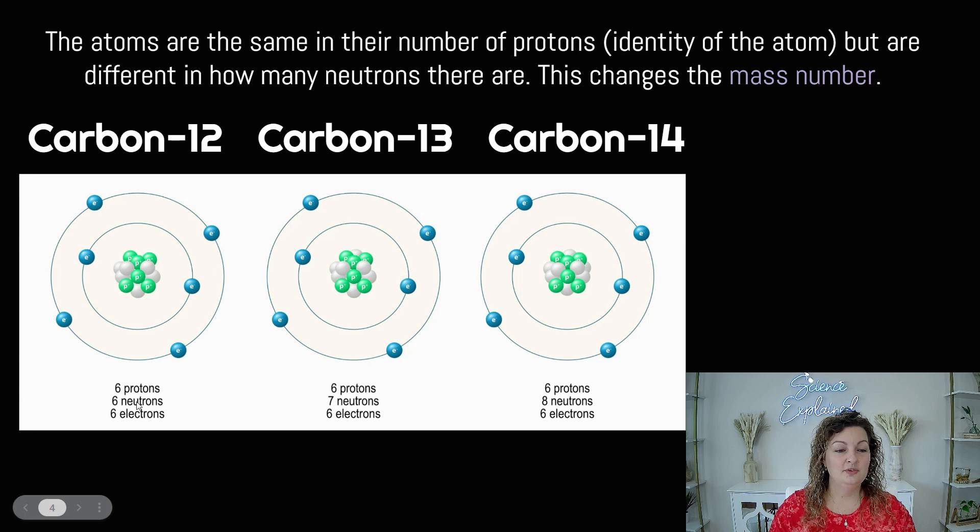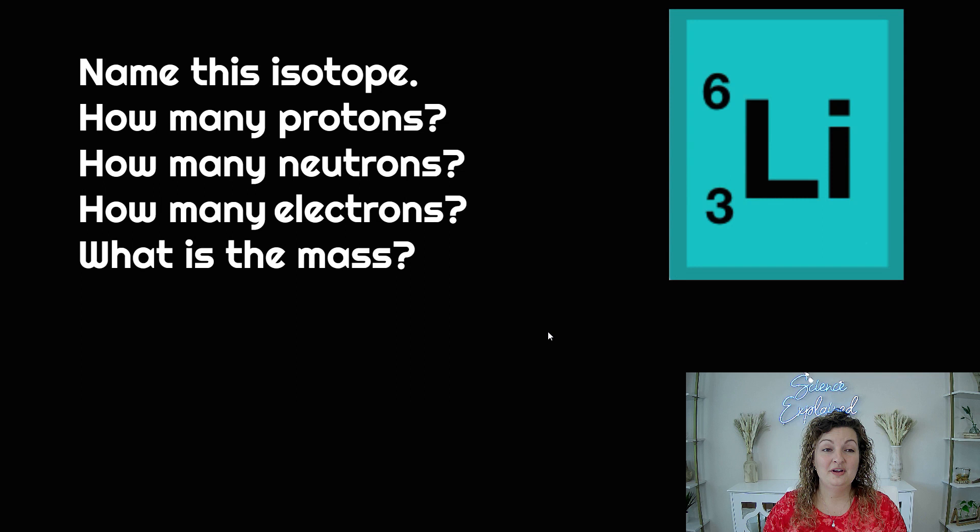and then our number of neutrons are going to add up to that mass. So six plus six equals 12, and then six protons plus seven neutrons equals 13, and then six protons plus eight neutrons equals 14. All of these particular ones happen to be neutral, but you can have an isotope that is also a charged ion. So just be careful of that when you're looking at your electrons.